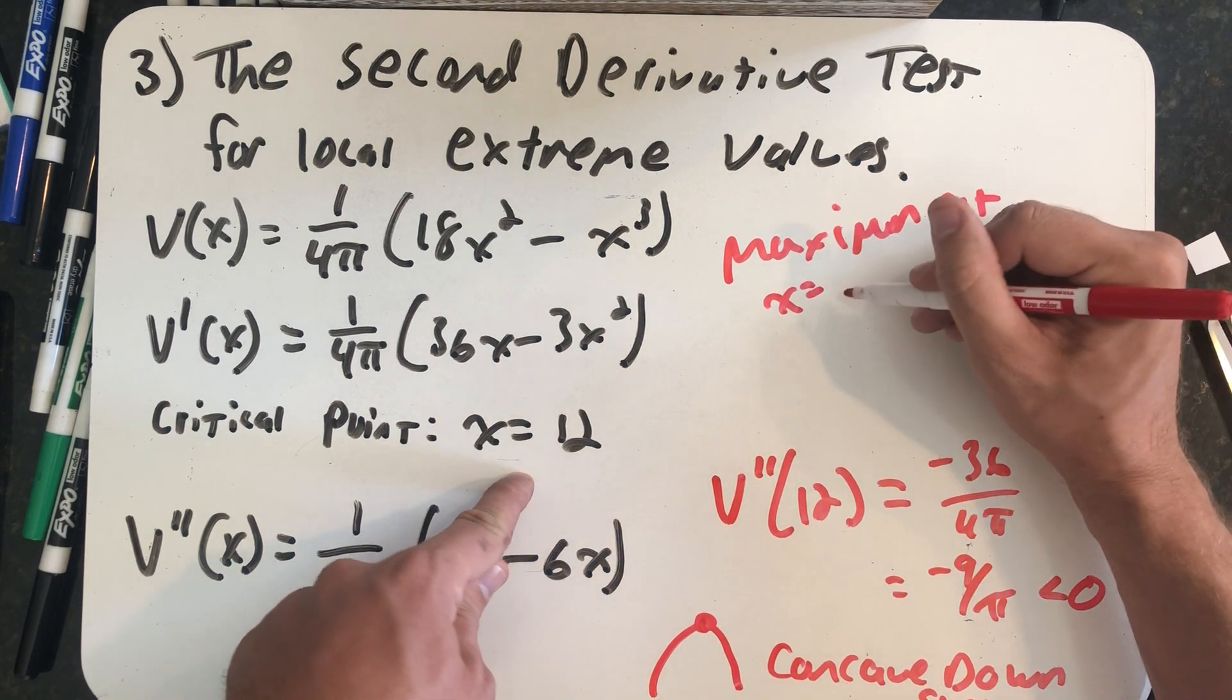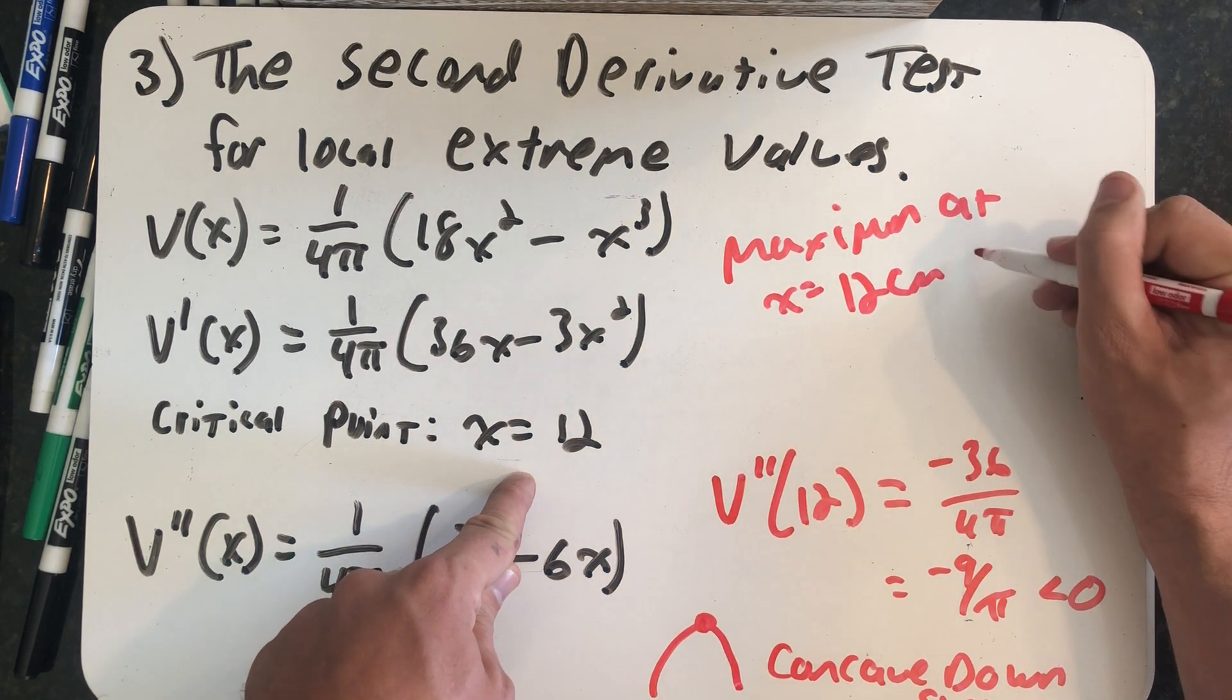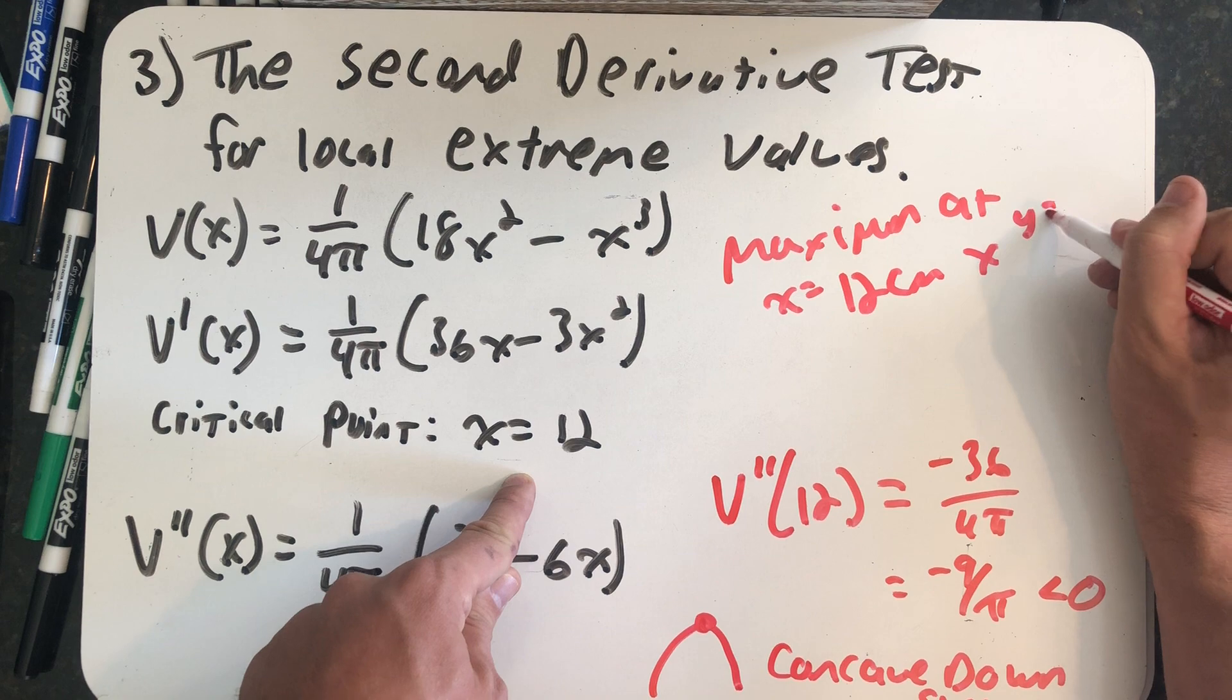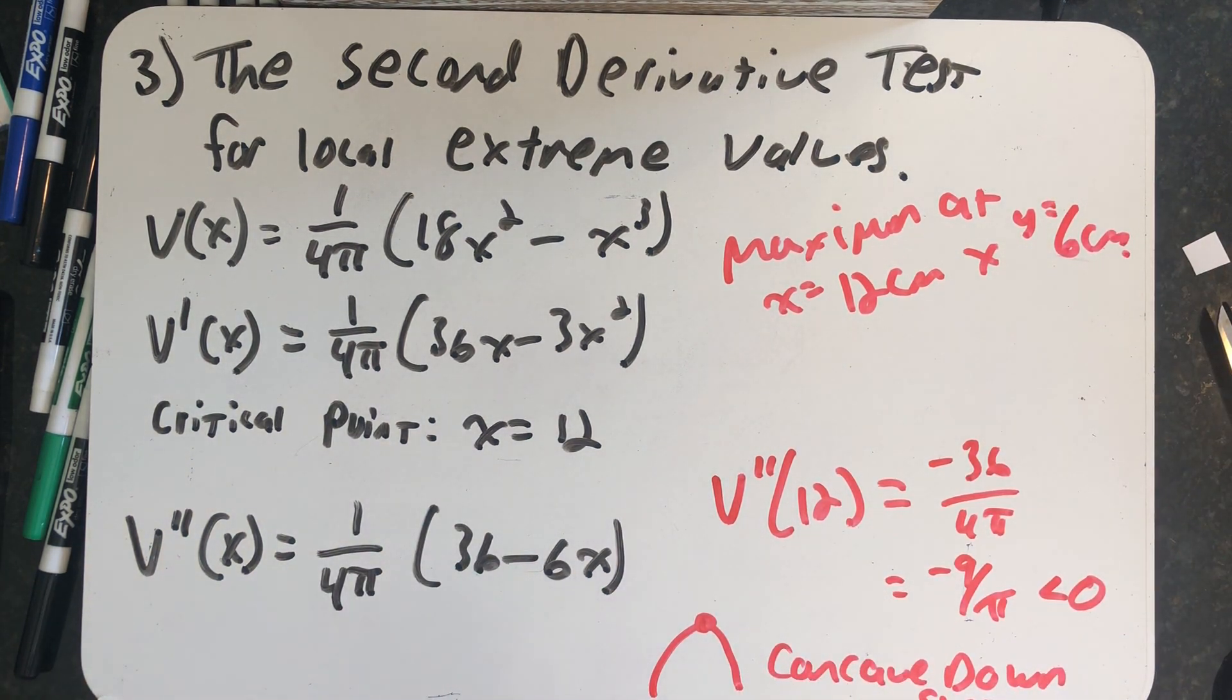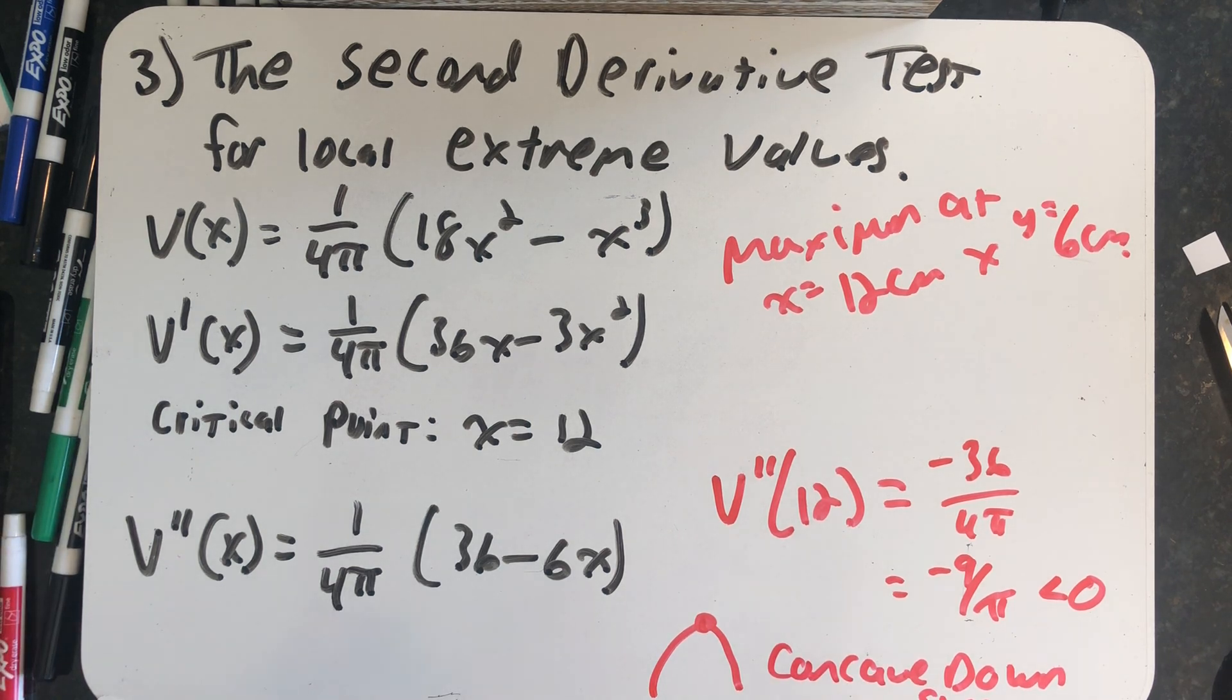So there is a maximum at x equals 12 centimeters by y equals 6 centimeters, no matter the method we use to test the critical point. The reason I wanted to do this three different ways was to show you that there was always more than one way to do this. Personally, for this problem, because the domain is so easy to find, I like using the extreme value theorem.